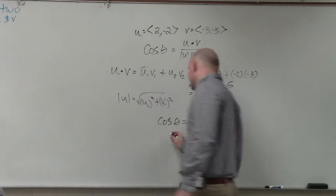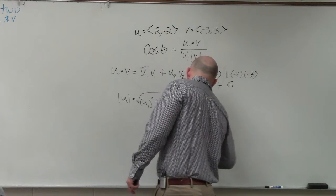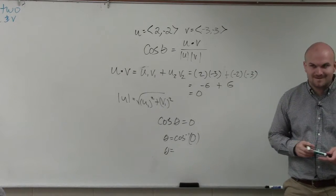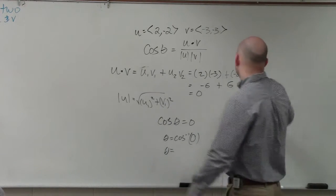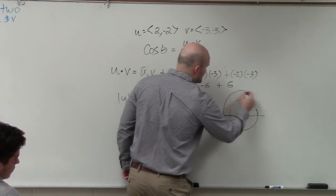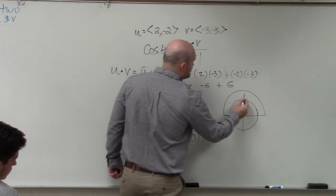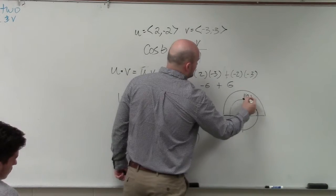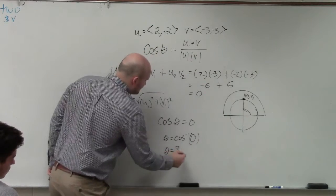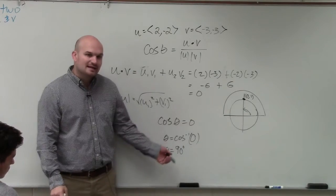So therefore, when we do the cosine inverse, theta equals cosine inverse of 0. And theta is going to equal — you don't even need a calculator. When is cosine, on the unit circle, equal to 0? When is the x-coordinate equal to 0? This point right here, 0 comma 1. What is that angle? 90 degrees. Didn't even need a calculator. So it's 90 degrees.